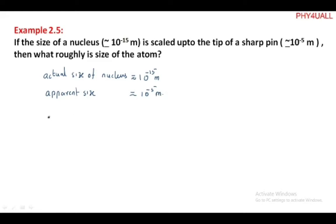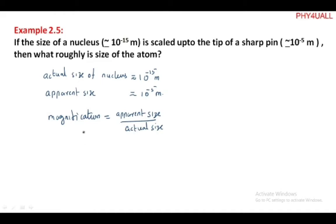The magnification is equal to apparent size divided by actual size. So magnification M equals 10 to the power minus 5 meter, which is the tip of the sharp pin, divided by 10 to the power minus 15 meter, which is the actual size of the nucleus.